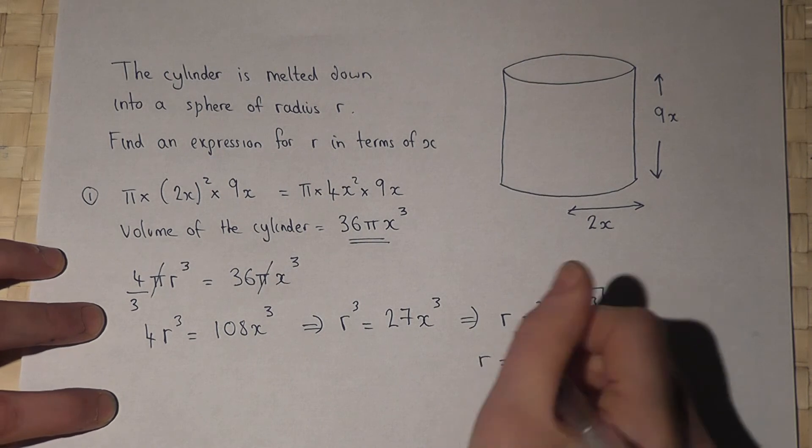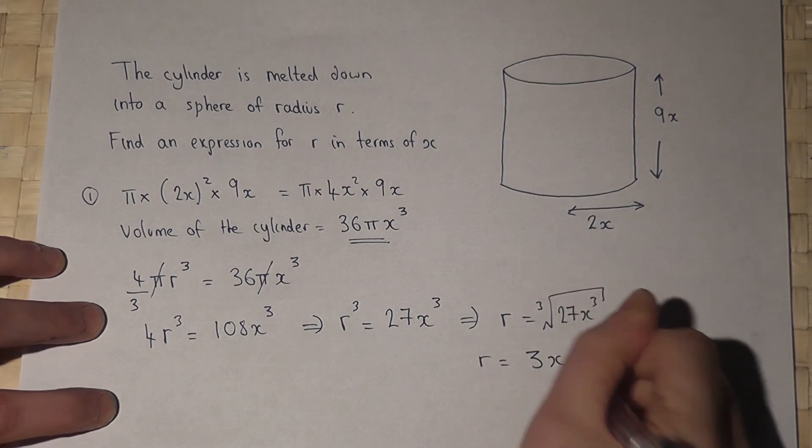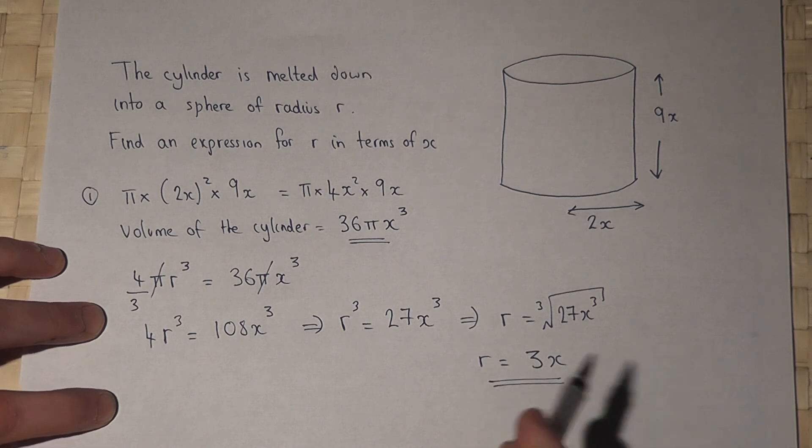Well the cube root of 27 is 3, the cube root of x³ is x, so r equals 3x.